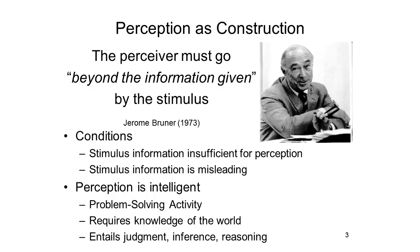Now let's look at four other sets of empirical findings that seem to cause problems for the ecological view of perception and seem to warrant another view entirely. This alternative point of view is known as the constructivist view of perception, which is probably best expressed by the American psychologist Jerome Bruner, with his idea that the perceiver must go beyond the information given by the stimulus. Bruner and other constructivists have argued that under ordinary conditions, the stimulus information is simply insufficient for perception, and sometimes stimulus information is downright misleading. Instead of a relatively mechanistic view, the constructivist view sees perception as intelligent problem-solving activity. The perceiver is trying to make sense of the stimulus environment, requiring knowledge of the world and processes of judgment, inference, and reasoning to figure out what objects there are in the world, where they are, and what they're doing.